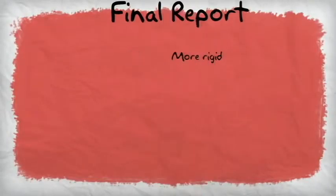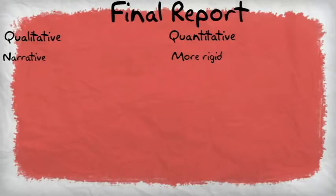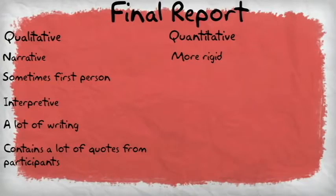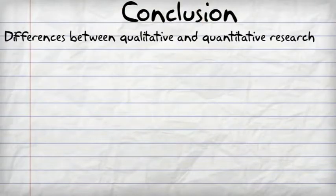Lastly, the final report. In qualitative research, the final report is usually narrative, more interpretative, and contains a lot of writing. The final reports for quantitative research are more rigid in form and focus more on statistical reporting.